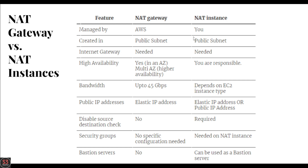Internet gateway is required for both NAT gateway and NAT instances. For high availability, NAT gateway supports multiple AZs and is highly available. For NAT instances, high availability is the responsibility of the person who created the instance. For bandwidth, NAT gateway can be auto-scaled up to 45 Gbps, while for NAT instances the bandwidth depends on the EC2 instance type.